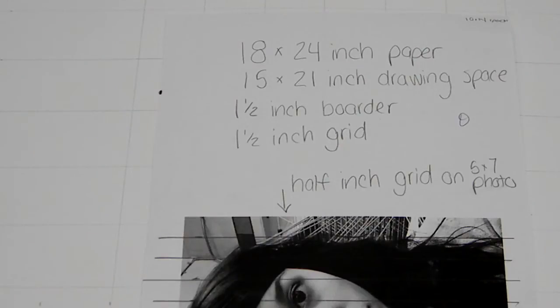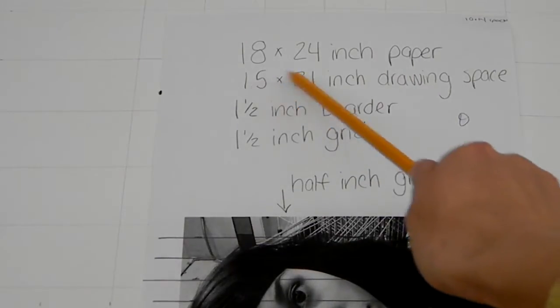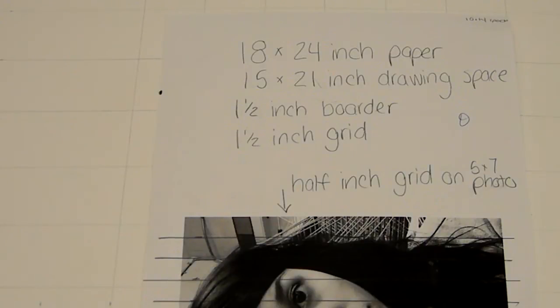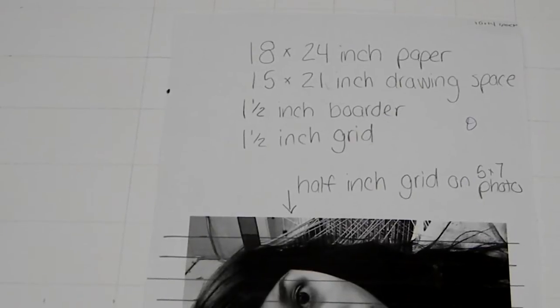I put this up here for reference. We're working on 18 by 24 inch paper. Our drawing space is going to be 15 by 21, meaning we'll have a 1.5 inch border and a 1.5 inch grid inside that border. It seems like a lot of math but when you break it down it's not that much.